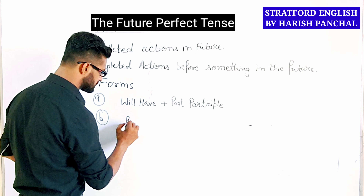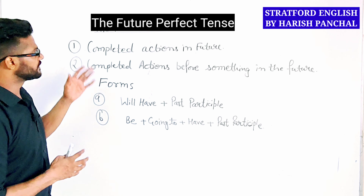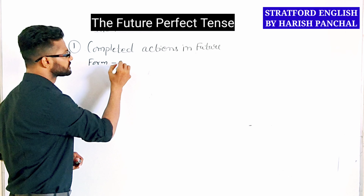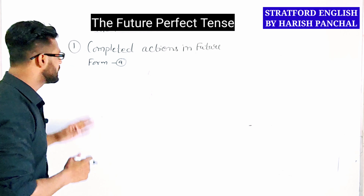The future perfect tense is used in two situations. The first situation is completed actions in the future. The second situation is completed actions before something in the future.